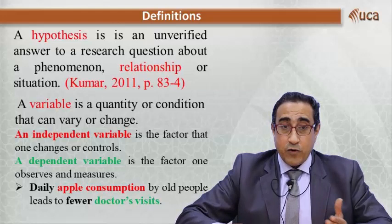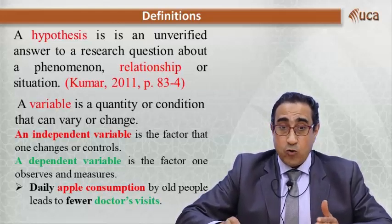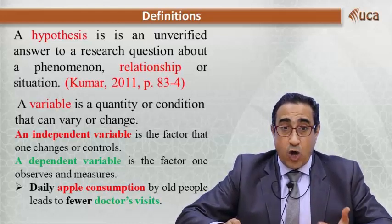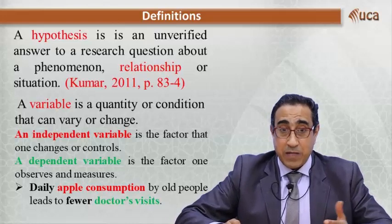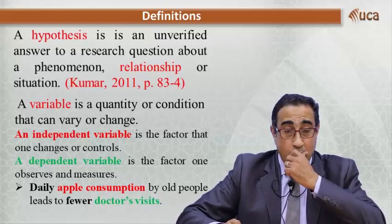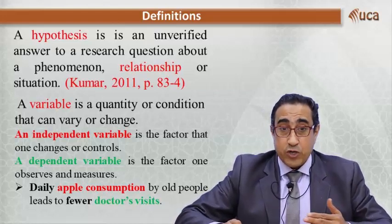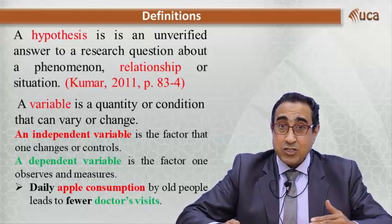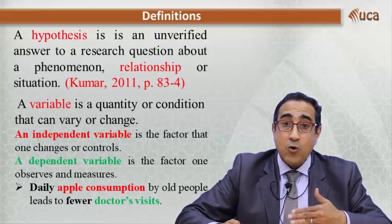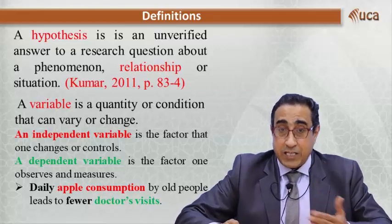Let's have an example. Daily apple consumption by old people leads to fewer doctors' visits. So, daily apple consumption is the independent variable — it can be daily, weekly, and so on. Fewer doctors' visits is the dependent variable, because these visits depend on how much or how many apples the old people consume.